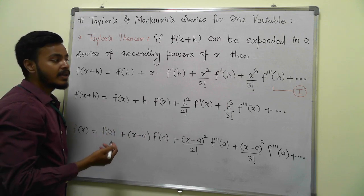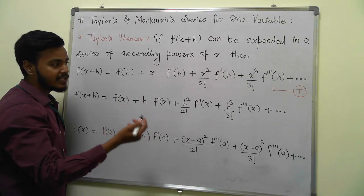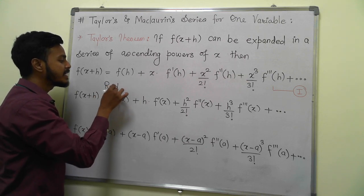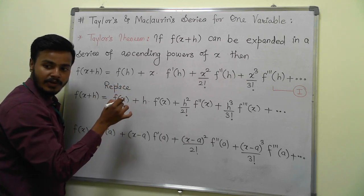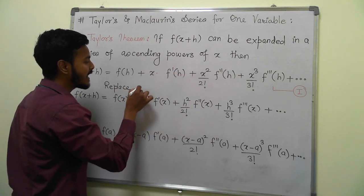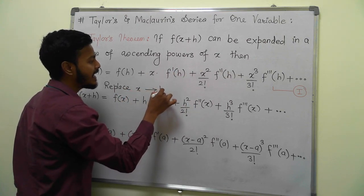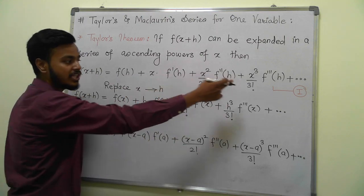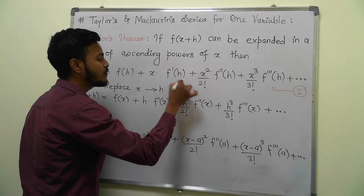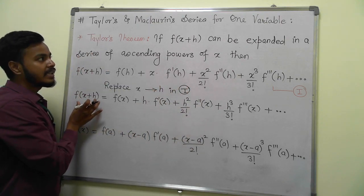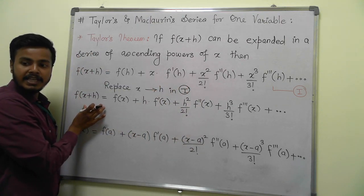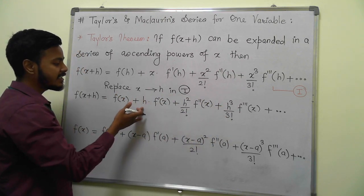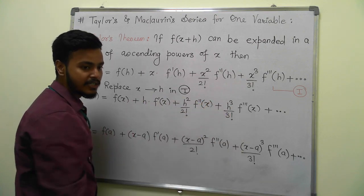The same thing you can do in ascending powers of h. What you have to do is just replace x by h. The moment you replace x by h in equation 1, you would be getting the expansion of the function f(x+h) in the ascending powers of h, like you can see h, h², h³ and so on.